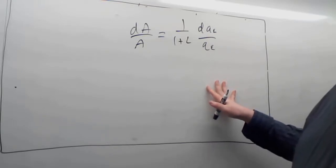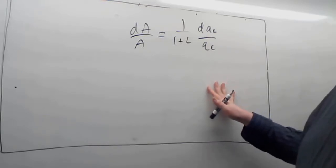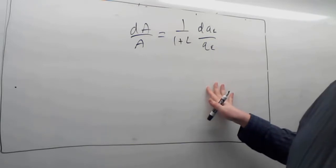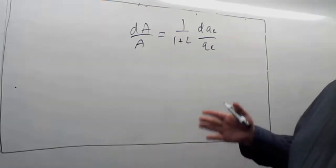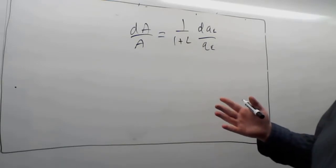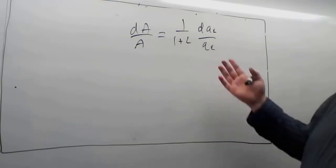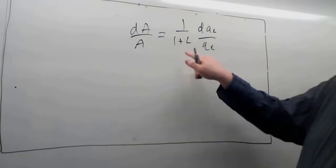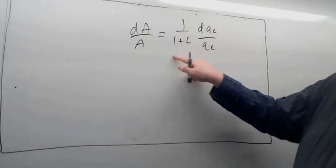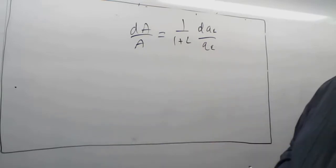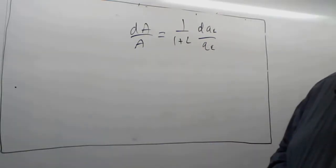This is why we can get away with op-amps that don't have very accurate open-loop gains, and also why we can get away with op-amps that have non-linear open-loop gains — gains that vary as a function of magnitude or frequency — because we clean that up by a factor of 1 over the loop gain.